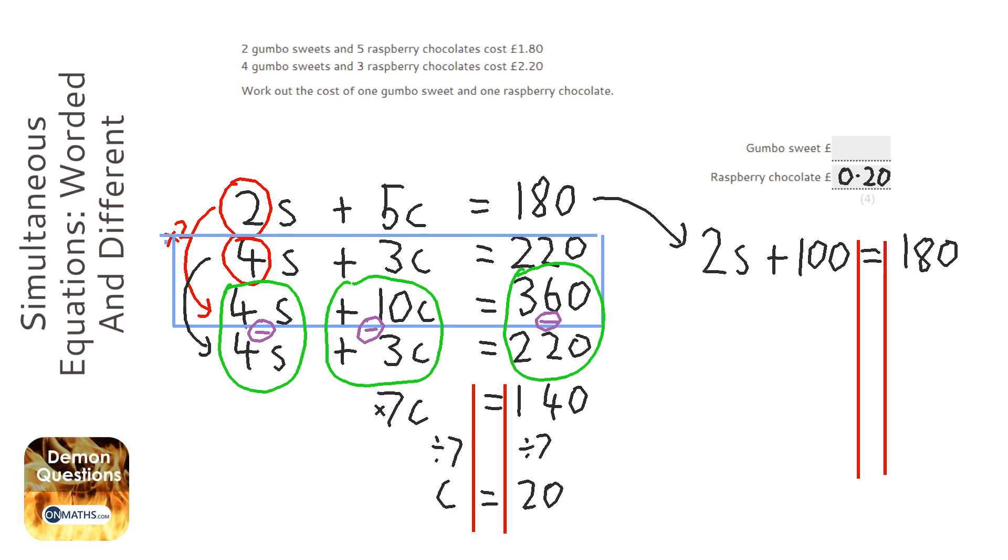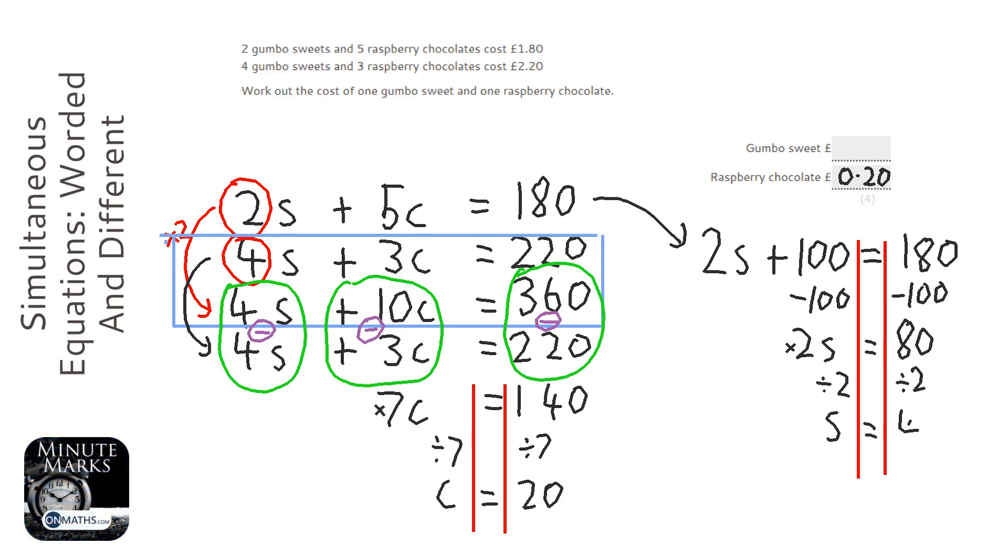First of all, we're going to get rid of that 100, so we take away 100 from both sides. So 2S equals 80, and then that's a times 2 there, so we divide by 2 on both sides. So S equals 80 divided by 2, which is 40. And in pounds, that's going to be 0.40 pounds.